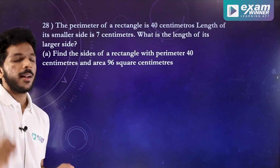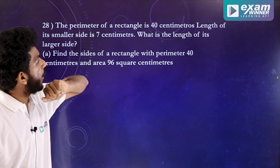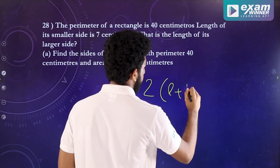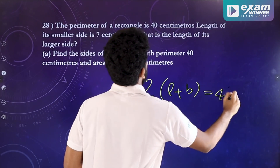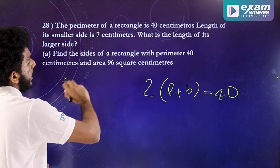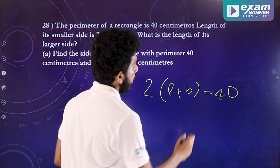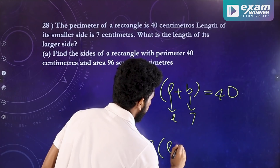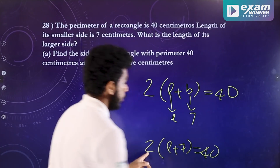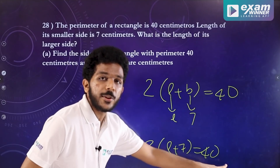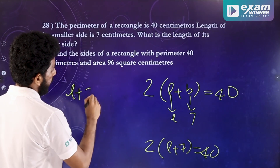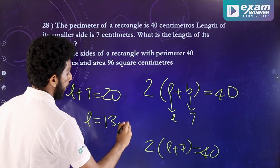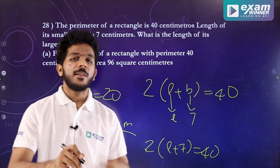The 20th question: we have a rectangle and perimeter is 40. Perimeter equals 2 into (L plus B) equals 40 cm. The length of the smaller side is 7 cm. Then 2 into (L plus 7) equals 40, so L plus 7 equals 20, giving L equals 13 cm. The larger side is 13 cm.